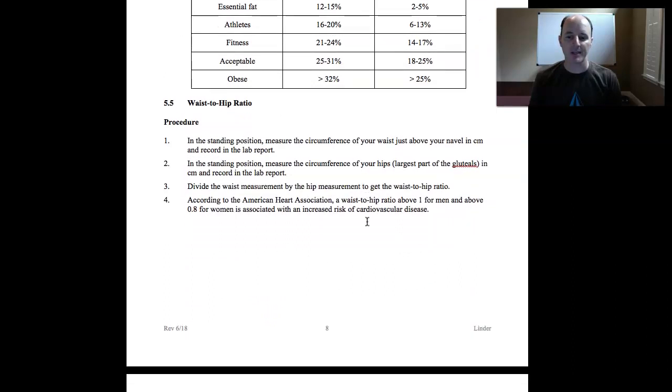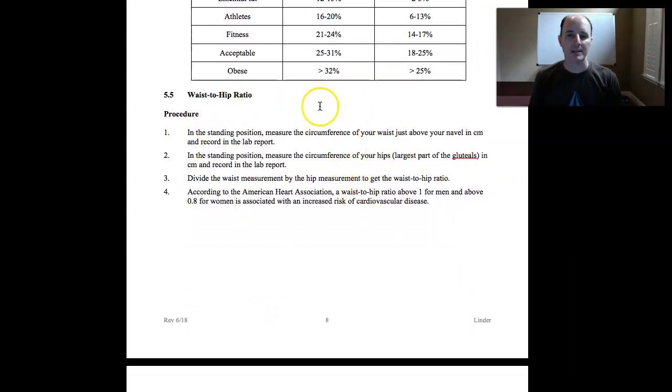And then if you have a tape measure at home, you can do the waist to hip ratio, where basically you measure around your umbilicus and then you measure around your gluteal region. And then you divide those two numbers. And so waist to hip ratio.